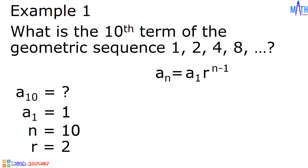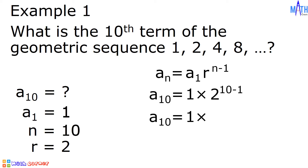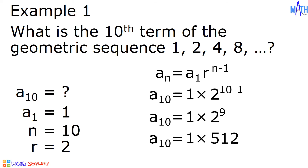Let us use the formula and substitute all the given values. a sub n becomes a sub 10. a sub 1 is equal to 1, r is equal to 2, and n minus 1 is 10 minus 1. Let us simplify: a sub 10 is equal to 1 times 2 raised to 9. 2 raised to 9 means we multiply 2 by itself 9 times. And we have a sub 10 is equal to 1 times 512.